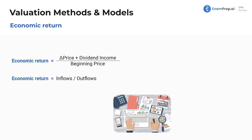Economic return — what is our economic return? It really is just the normal return on something. This is similar to inflows and outflows; it literally is inflows divided by outflows. If we're talking about return on a stock, it's the delta — this triangle means delta, if you are not aware — and delta means change, so change in price.